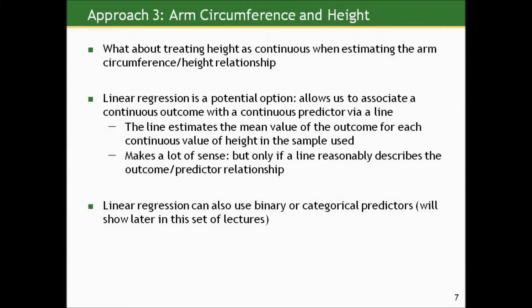I'm going to propose a third approach: what about treating height as continuous when estimating the arm circumference–height relationship? We can do this using a method called linear regression. It allows us to associate a continuous outcome with a continuous predictor via a line, estimating the mean value of the outcome for each continuous value of height. This makes a lot of sense — but only if a line reasonably describes the outcome–predictor relationship, that is, only if the arm circumference–height relationship is well described by a line.